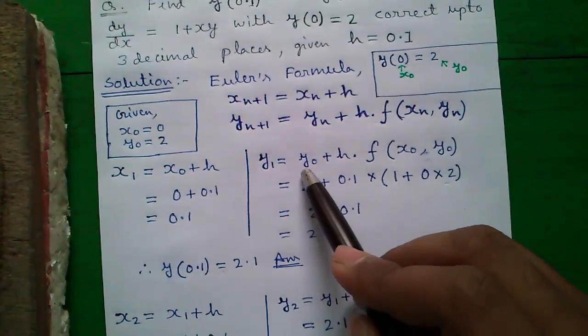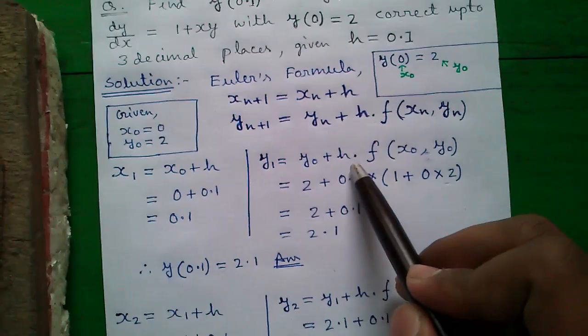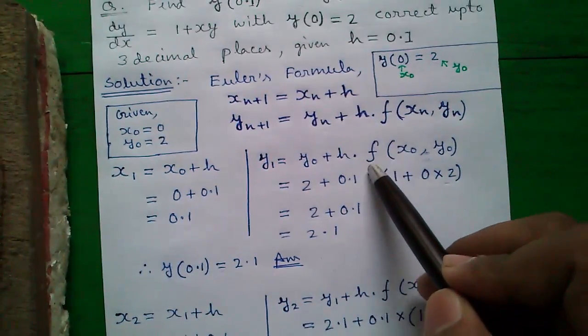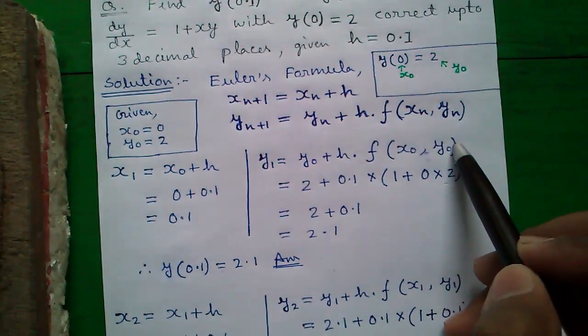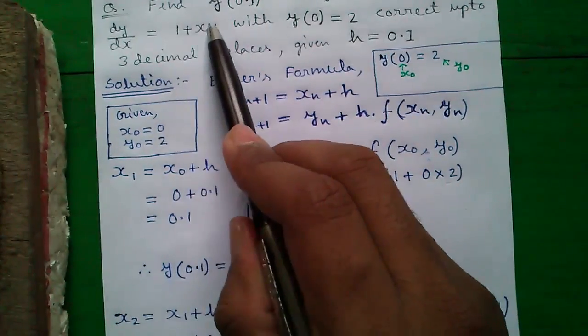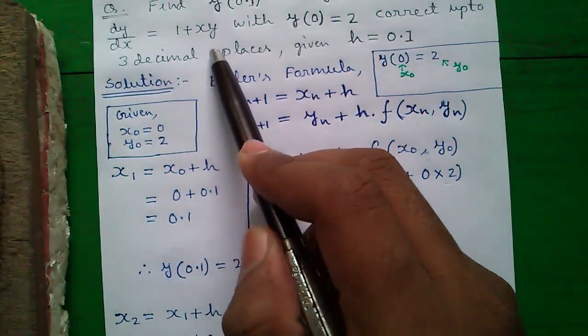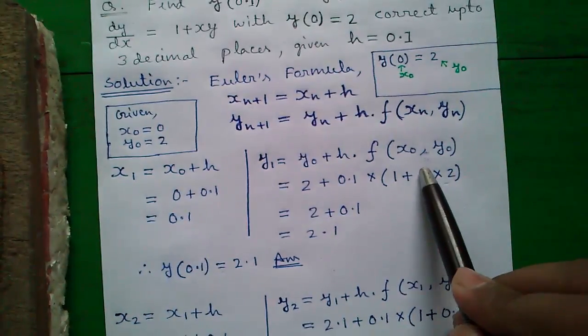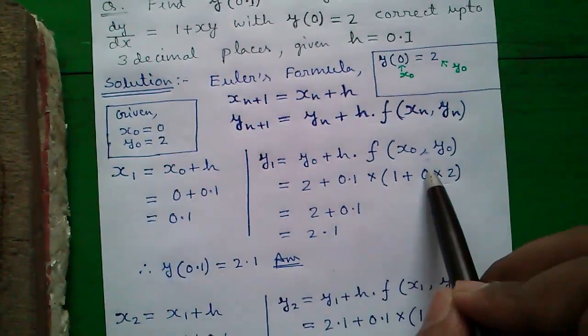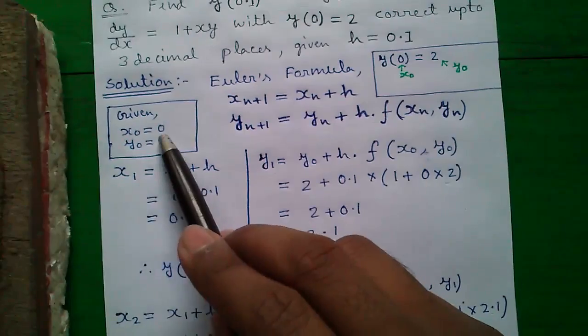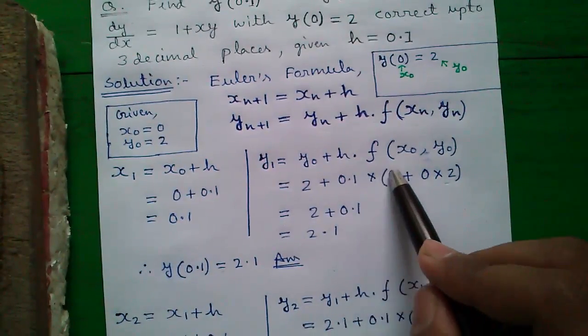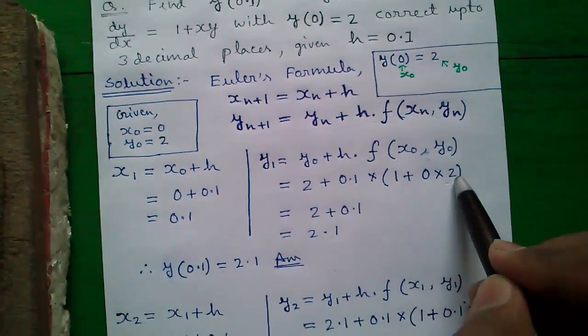Next y_1. y_1 is y_0 plus h into function of x_0 comma y_0. What is the function? The function is given in the question: dy/dx equals to 1 plus xy. So 1 plus x_n that is x_0 that is 0 into y_0 that is 2. So 2 plus h into 1 plus x_0 into y_0.